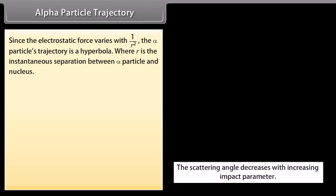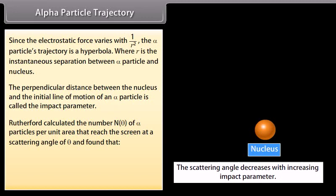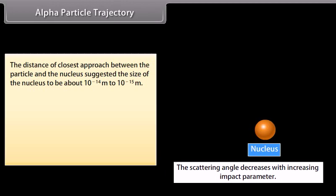Alpha particle trajectory. Since the electrostatic force varies with 1/r², the alpha particle's trajectory is hyperbolic, where r is the instantaneous separation between alpha particle and nucleus. The perpendicular distance between the nucleus and the initial line of motion of an alpha particle is called the impact parameter. Rutherford calculated the number N_θ of alpha particles per unit area that reached the screen at a scattering angle of θ and found that N_θ is inversely proportional to sin⁴(θ/2). The distance of closest approach between the particle and nucleus suggested the size of the nucleus to be about 10^-14 meter to 10^-15 meter.